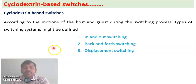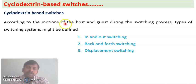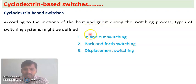The types of switching observed in cyclodextrin-based switches depend on the motion between the host — which is the cyclodextrin — and the hydrophobic guest molecule. We have three types of switching: in-and-out switching, back-and-forth switching, and displacement switching.